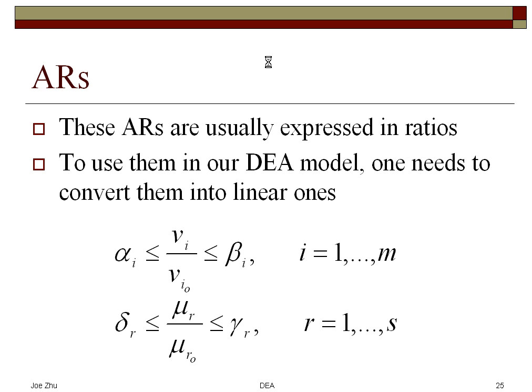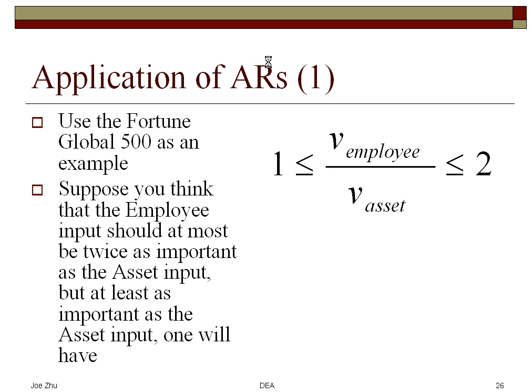You don't have to have all the ratios for all the inputs. For example, if you have five inputs, you may only have information on two of them — that's fine. For example, this is one assurance region between the number of employees and the assets, so this is one ratio constraint.